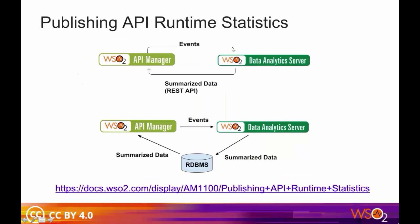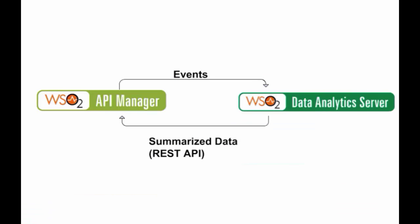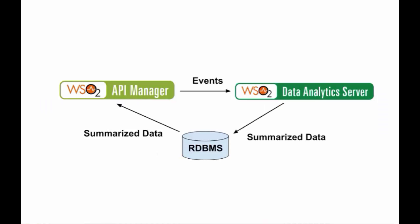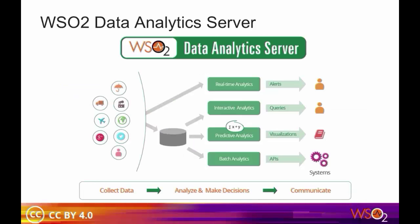In previous versions of API Manager, WSO2 Business Activity Monitor put the summarized data in a separate RDBMS, after which API Manager fetched data from that RDBMS. From API Manager 1.10.x onwards, data can be shared more efficiently directly to API Manager using the all-new DAS REST API. Additionally, you have the option of using the RDBMS client to publish data to the WSO2 Data Analytics Server by configuring an RDBMS to store the data if required.